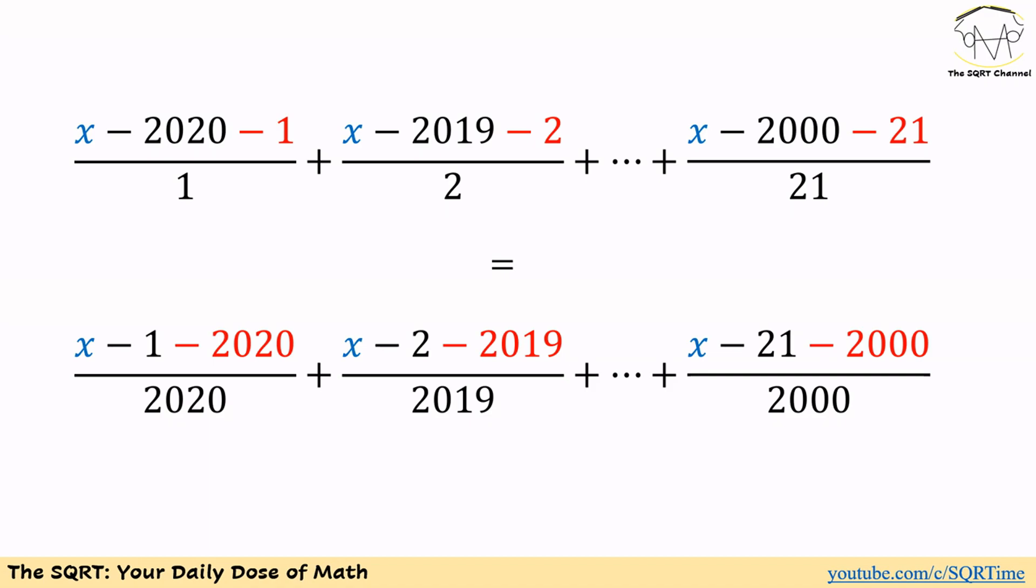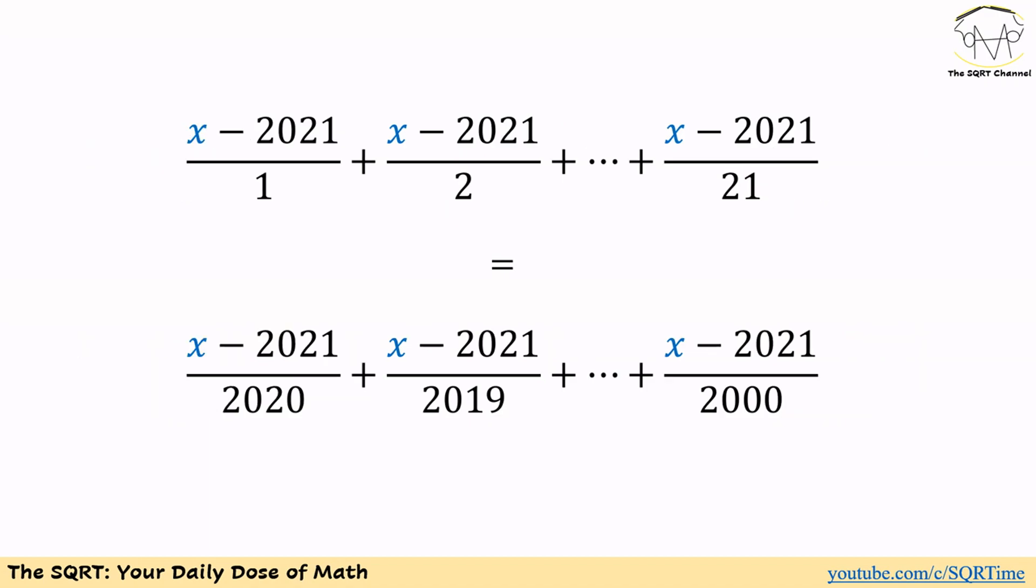For the left-hand side we will end up with negative 1, negative 2, and up to negative 21 in the denominator of each term. For the right-hand side we will end up with negative 2020, negative 2019, and finally negative 2000 in the denominator of each term.